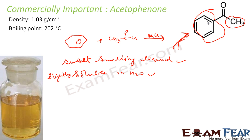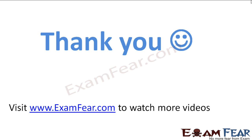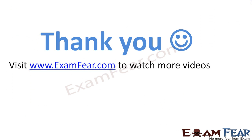Acetophenone is steam volatile and is used in perfume making. It is also used as a hypnotic agent due to its sweet smell. It is also used in the dye industry.